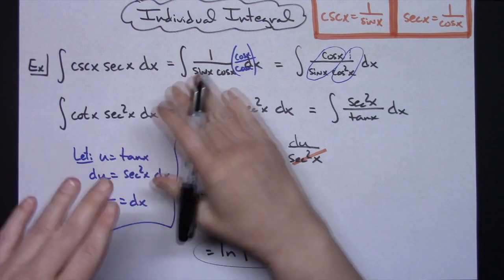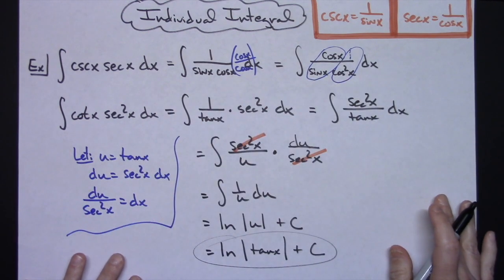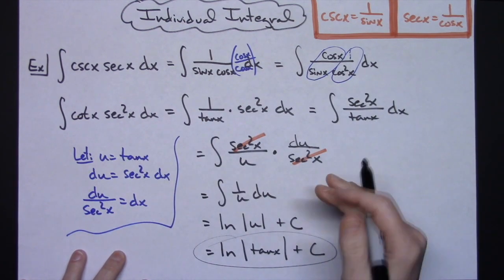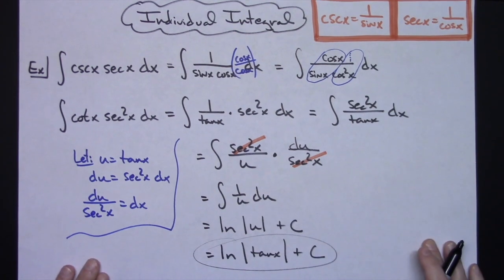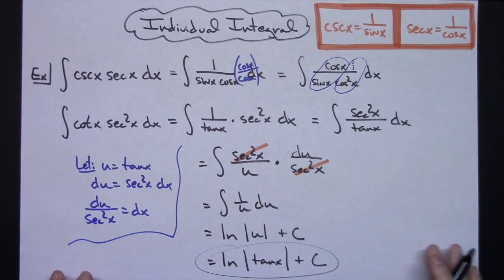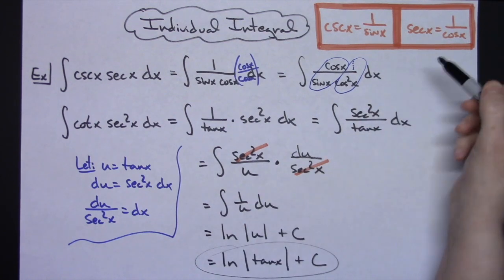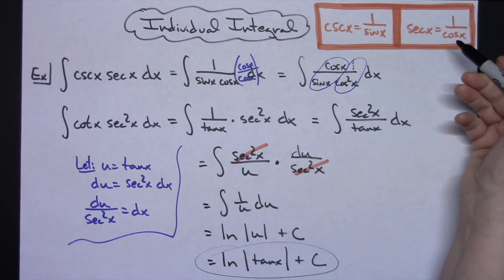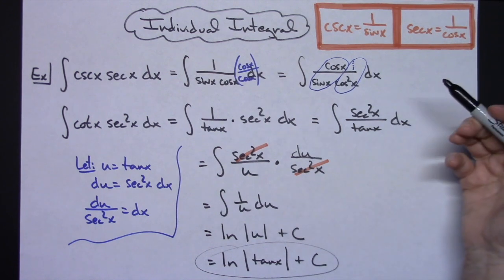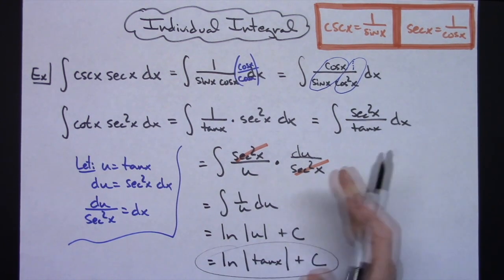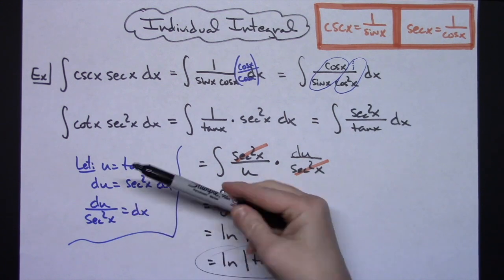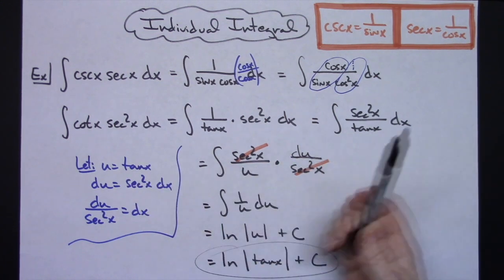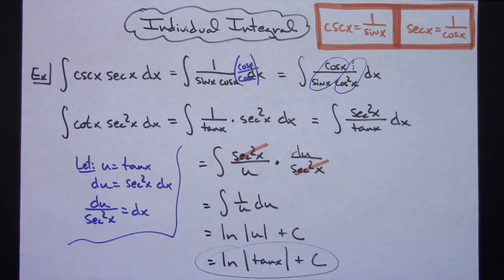After going through all of those various trig substitutions we finally get down to an integral where it's just a basic u substitution. The key with almost any trig integral is having a really good grasp on all of those reciprocal identities, trig identities, and double angle formulas — anything where you can do enough substitutions to hopefully lead yourself into a plain straightforward u substitution.